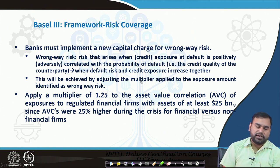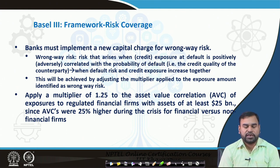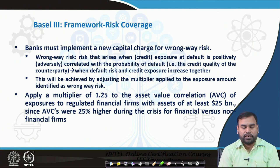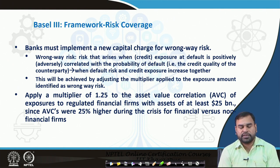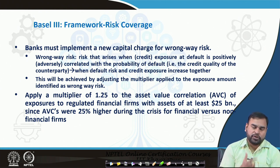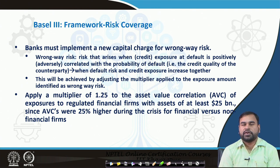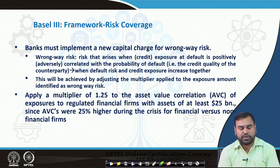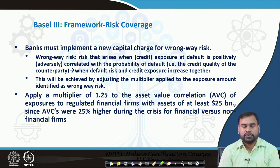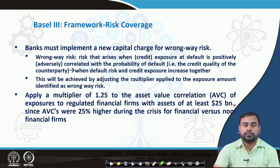The bank must also implement a new capital charge for wrong-way risk. Wrong-way risk arises when the exposure at default is positively correlated with the probability of default — when default risk is there, credit exposure increases. In that context, they apply a multiplier of 1.25 to the asset value correlation for regulated financial firms with assets of 25 billion dollars, since asset value correlations were 25 percent higher during the financial crisis for financial versus non-financial firms.